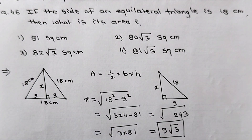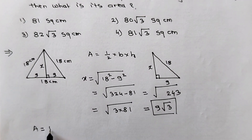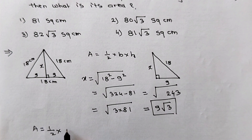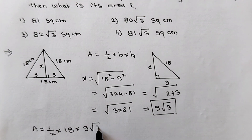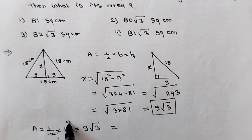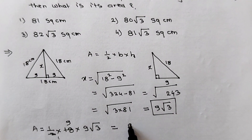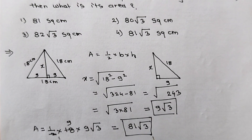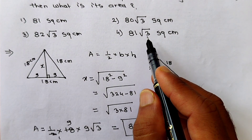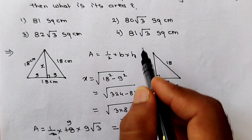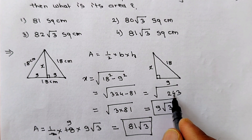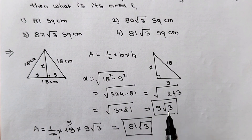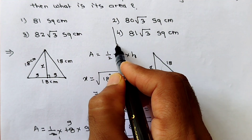Now we can calculate the area of this triangle. Area = 1/2 × base × height = 1/2 × 18 × 9√3 = 81√3. So the area of the triangle is 81√3. Since only √3 appears in the options, we can express 243 as 81 × 3. Our answer is option number 4.